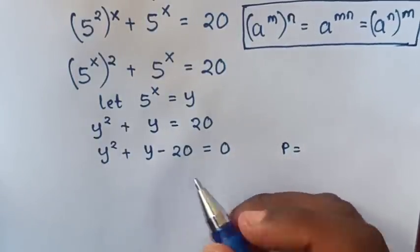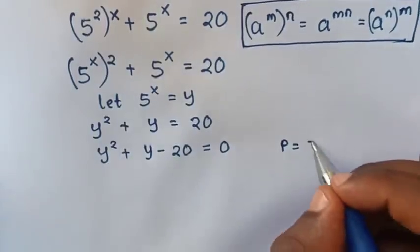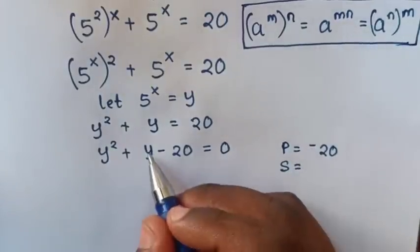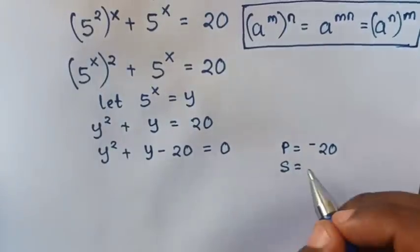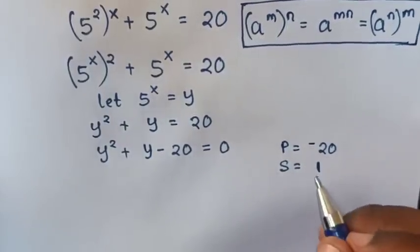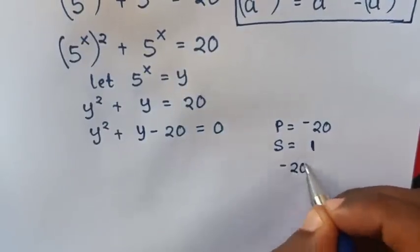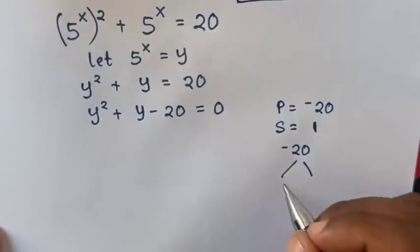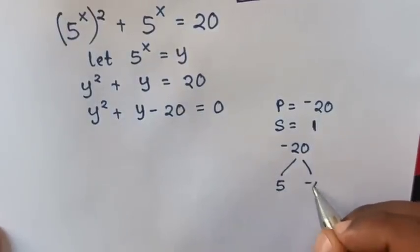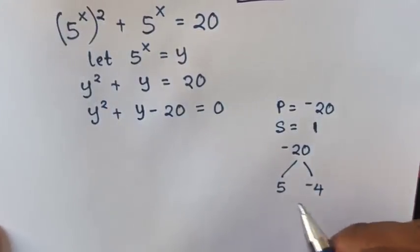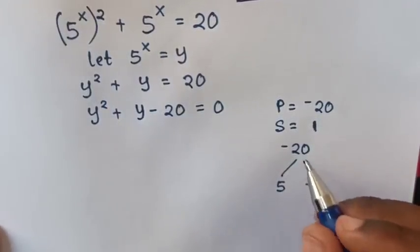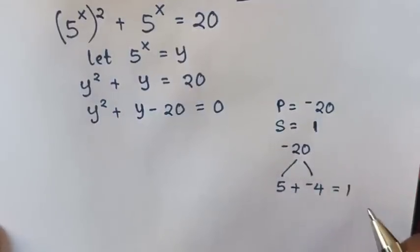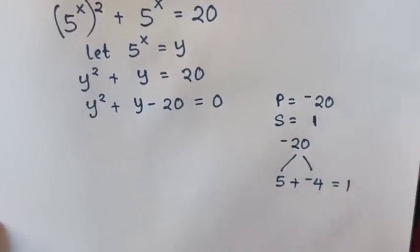The product is 1 times negative 20, which is negative 20. The sum is equal to the coefficient of y, which is 1. To get negative 20 as a product, we need two factors — 5 and negative 4 — since 5 times negative 4 is negative 20 and the sum of 5 and negative 4 is 1.